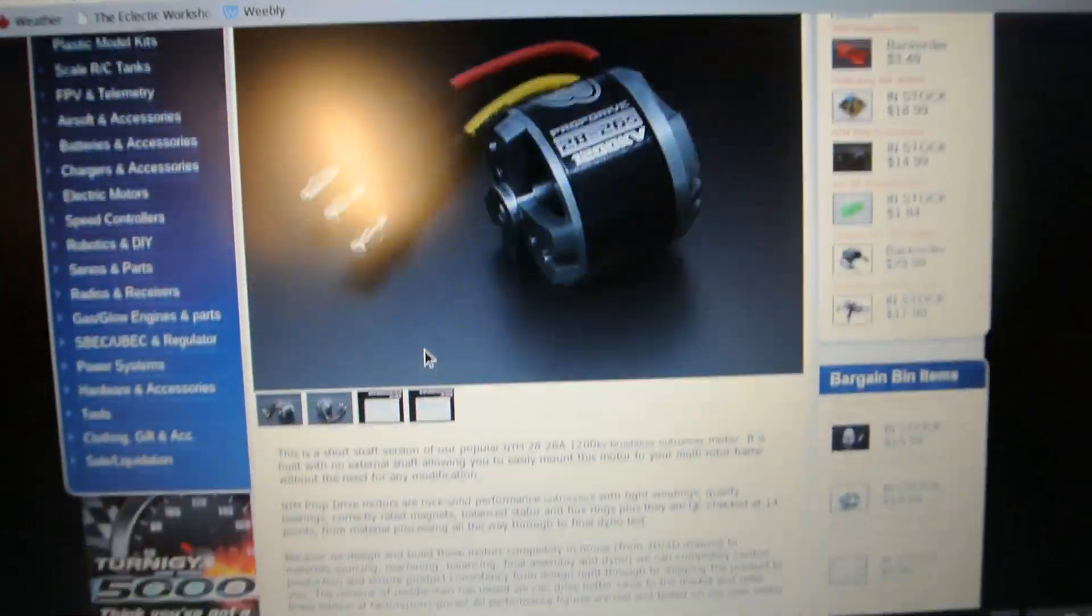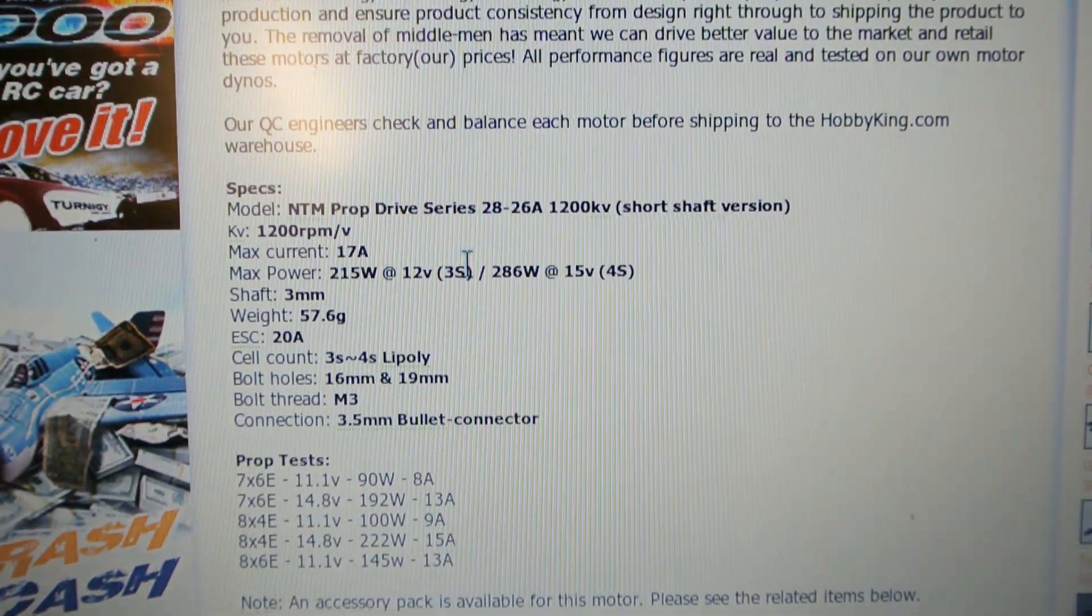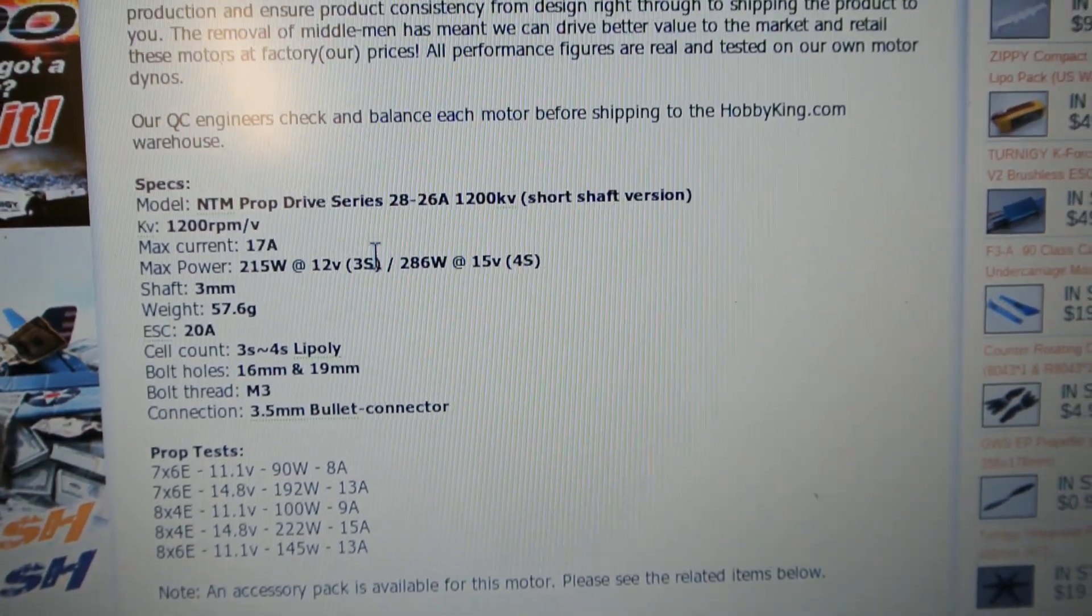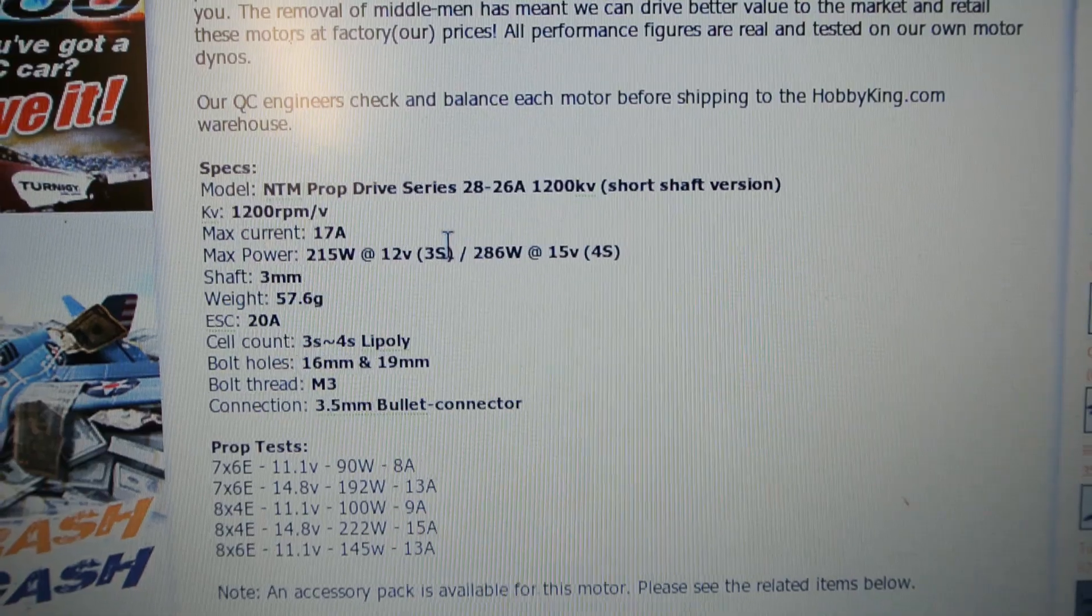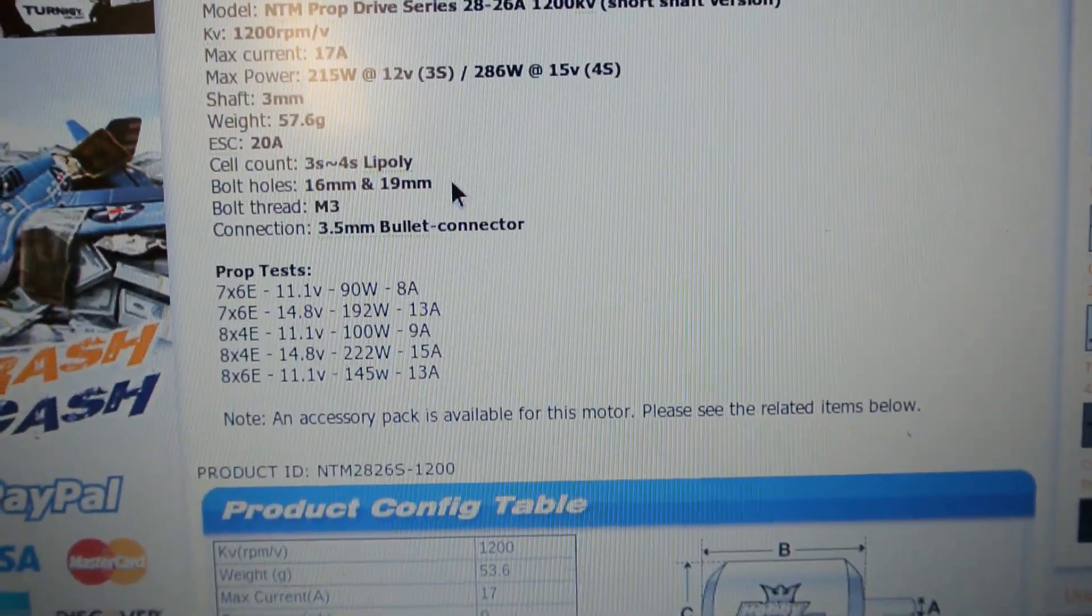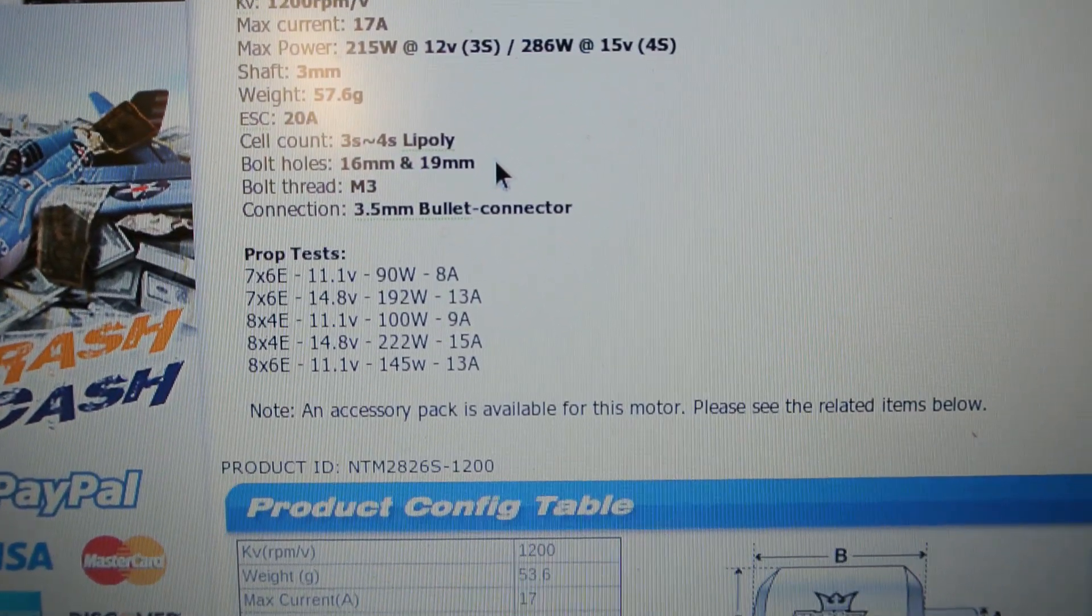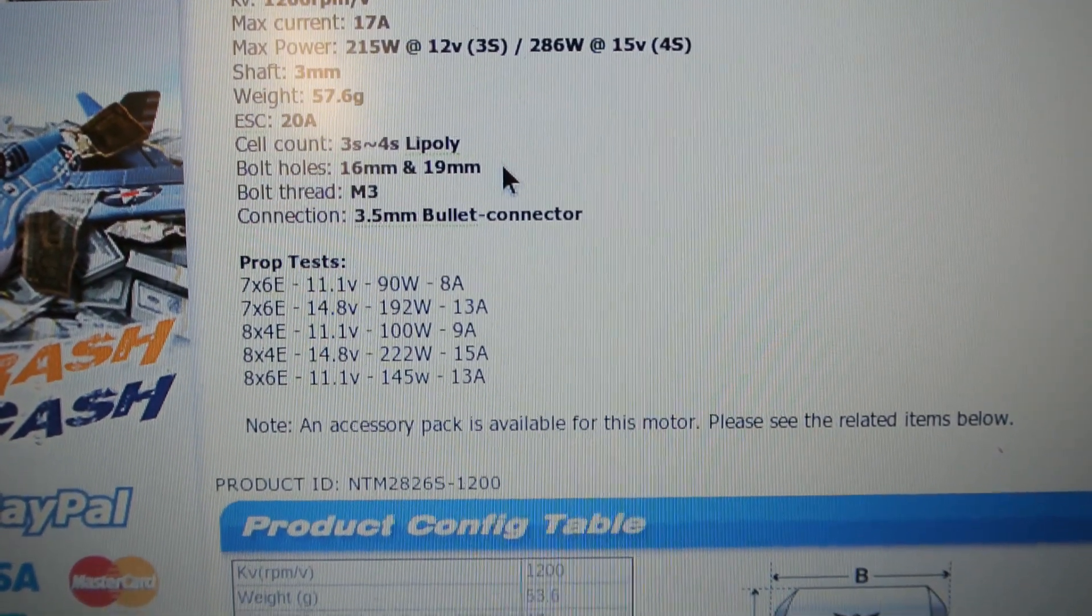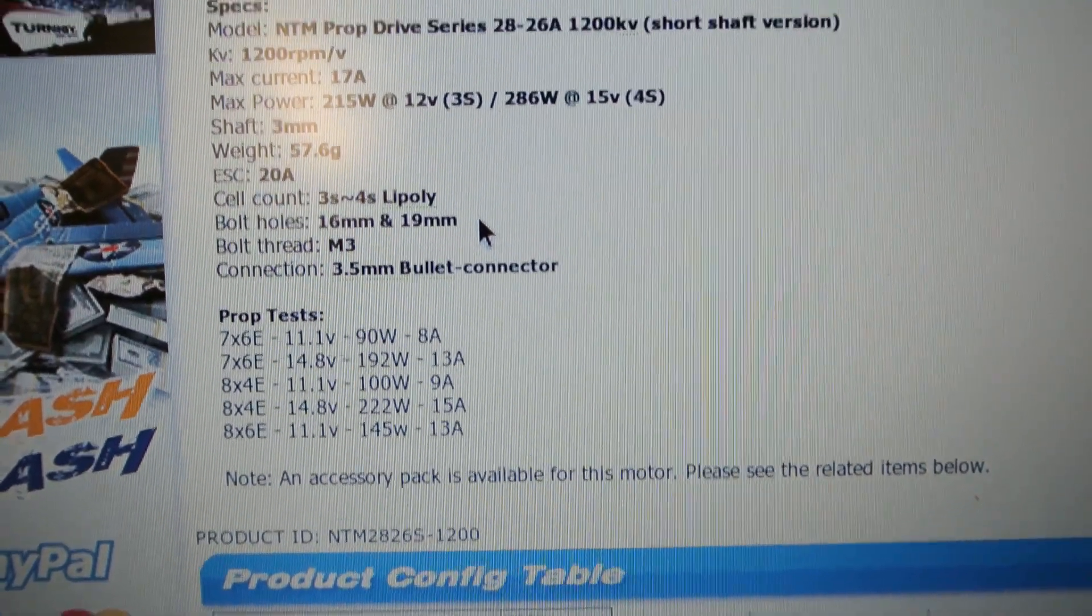So as I scroll down onto the spec sheet, it says that the max current is actually 17 amps. So I'm 3 amps above that on a 4S with an 8 by 4.5 inch prop. It says the recommended ESC is 20 amps. And the prop test that they did, when you look at the 8 by 4—now I'm 0.5 more—on a 4S they're drawing 222 watts at 15 amps.